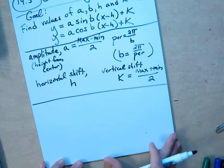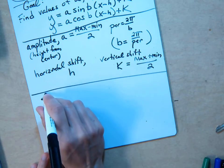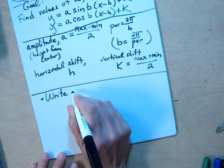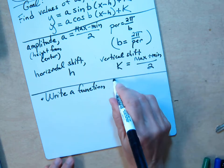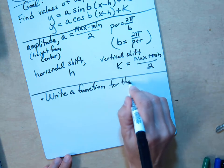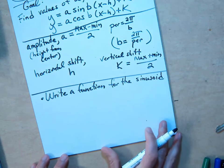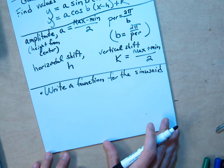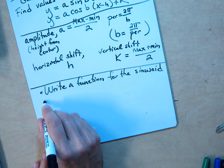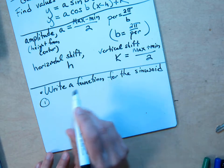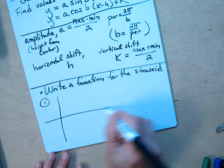Now let's do some examples. The directions or the test objective would say write a function for the graph, or the book says for the sinusoid. Find the model. Write the equation. The first example is, let's say we have a graph.